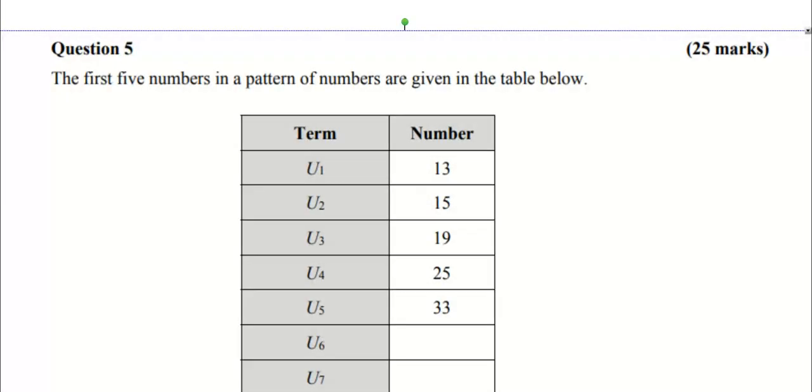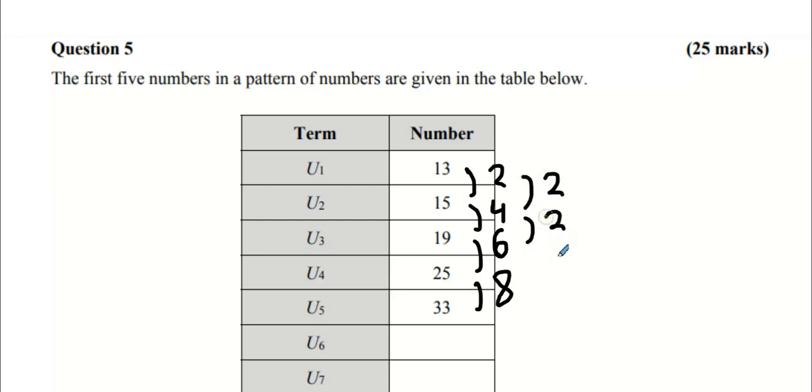Question 5: Patterns. We have a sequence here. What's the sequence going up in? What do you notice about the sequence? 2, 4, 6, 8. That means it's not a linear sequence. And what do you notice about the second difference? If the second difference is the same, it's known as a quadratic sequence.